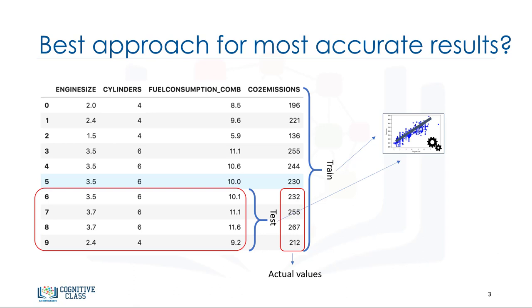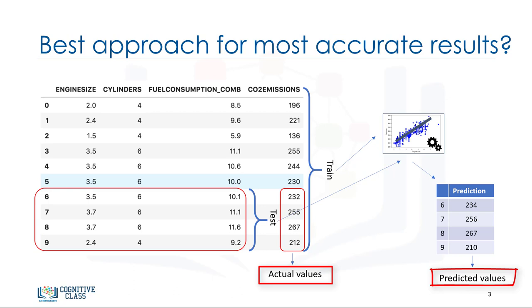Now, we pass the feature set of the testing portion to our built model and predict the target values. Finally, we compare the predicted values by our model with the actual values in the test set. This indicates how accurate our model actually is.